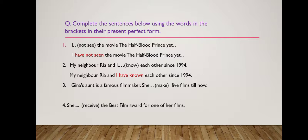Sentence 3: 'Guinness's aunt is a famous filmmaker. She [make] five films till now.' The subject is 'she,' so we use 'has,' and the third form of 'make' is 'made.' The answer is: 'She has made five films till now.'